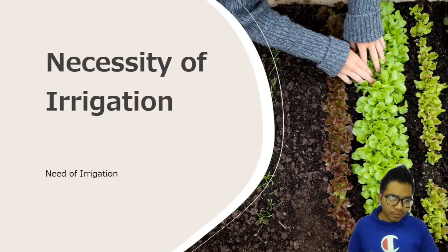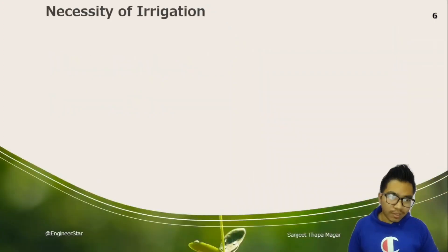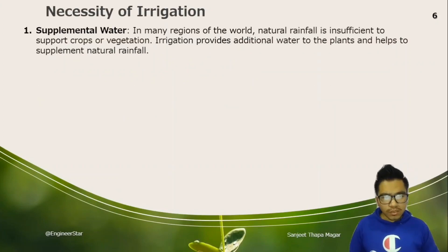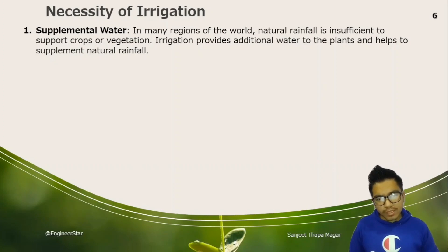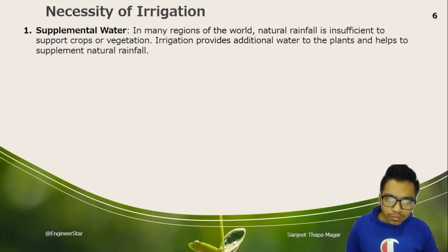Regarding the necessity of irrigation: in many regions of the world, natural rainfall is insufficient to support crops or vegetation. Irrigation provides additional water to the plants and helps to supplement natural rainfall.